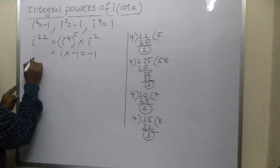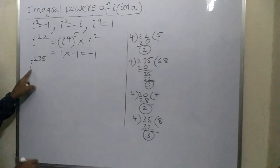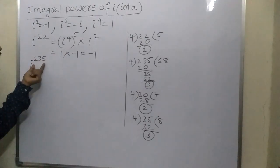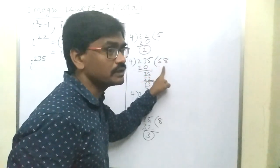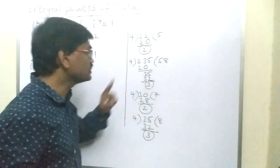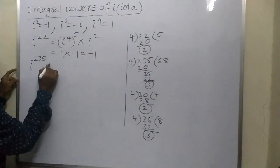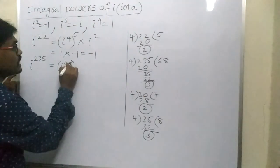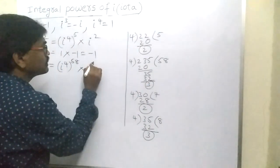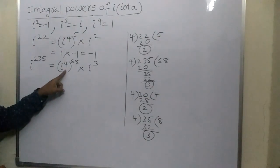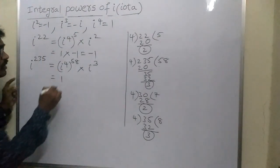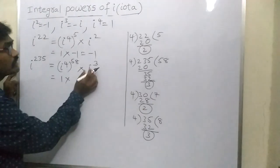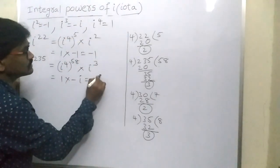Now let us take i²³⁵. Write down i²³⁵ in terms of 4. On dividing 235 by 4, you get quotient 58 and remainder 3. Write down i²³⁵ as (i⁴)⁵⁸ × i³. i⁴ value is 1; 1 raised to any power is 1. And i³ value is minus i. Therefore, i²³⁵ = minus i.